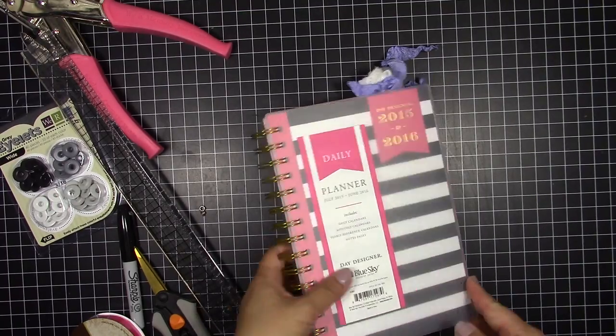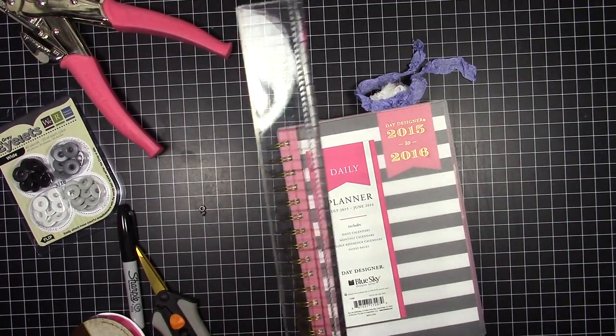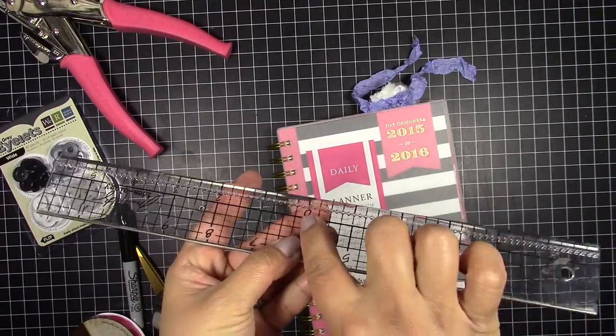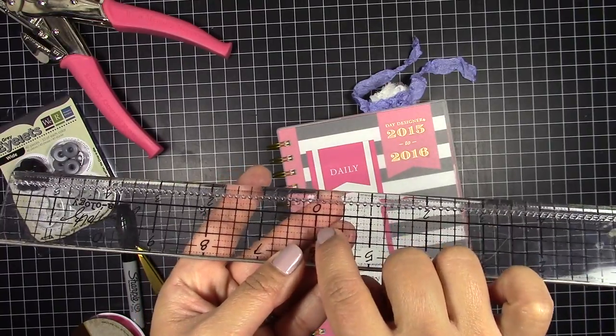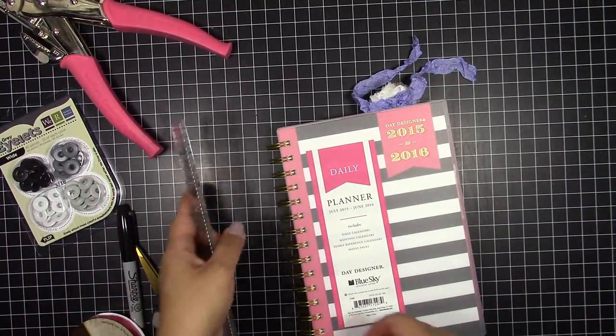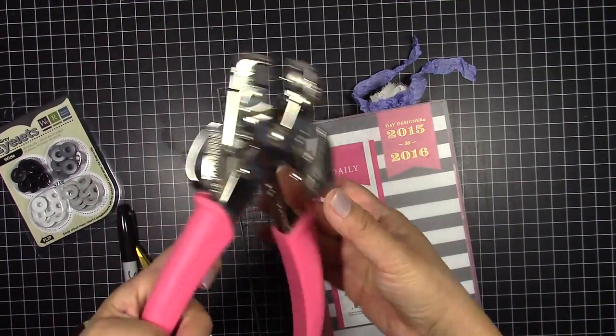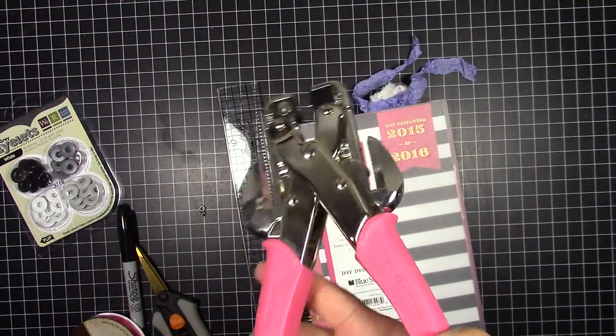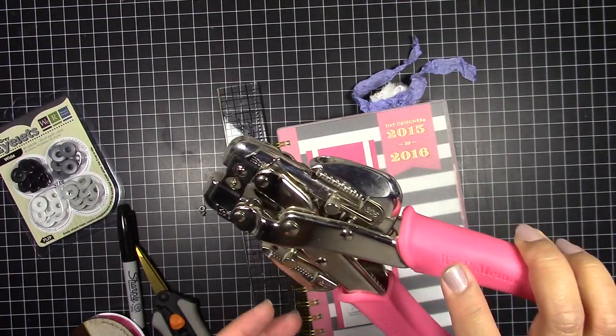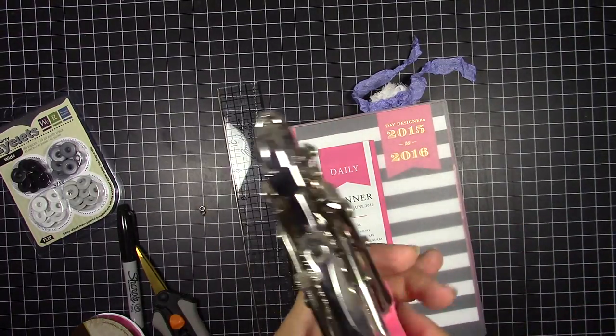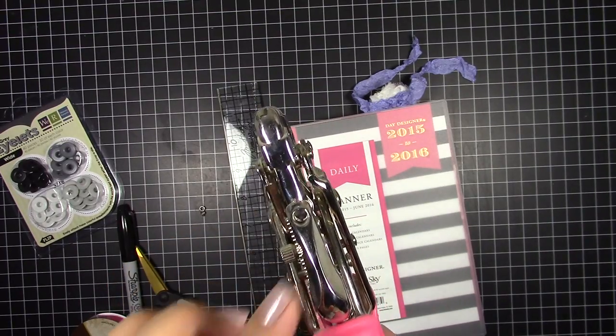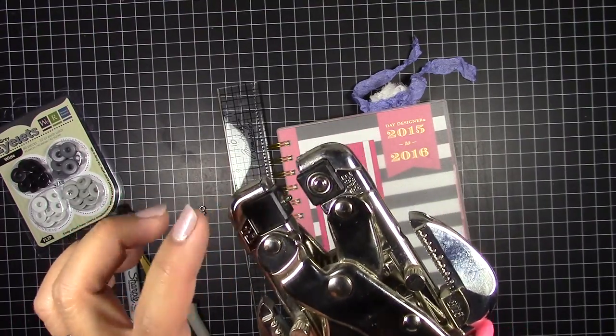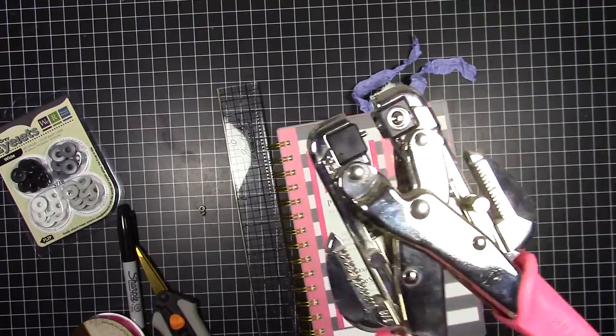So the very first thing you're going to need, of course, other than your planner, is a ruler and I have my Tim Holtz ruler right here. I love this one because this is a centering ruler so if you put the zero in the middle of a page, you can really figure out where the middle of something is. This is called a Crop-A-Dile by We Are Memory Keepers and this thing is humongous. I love this thing. It's great for punching holes.